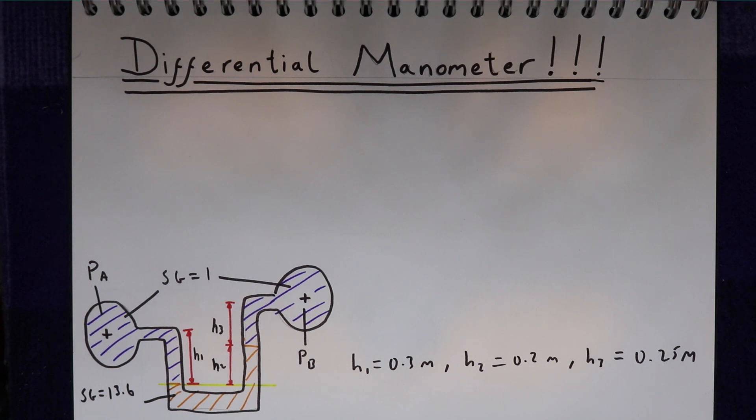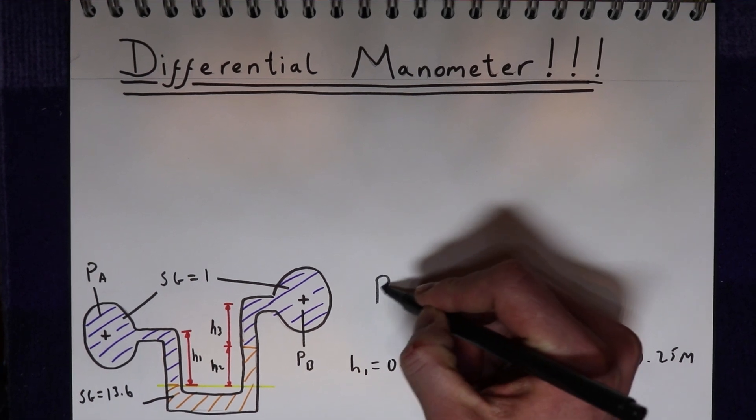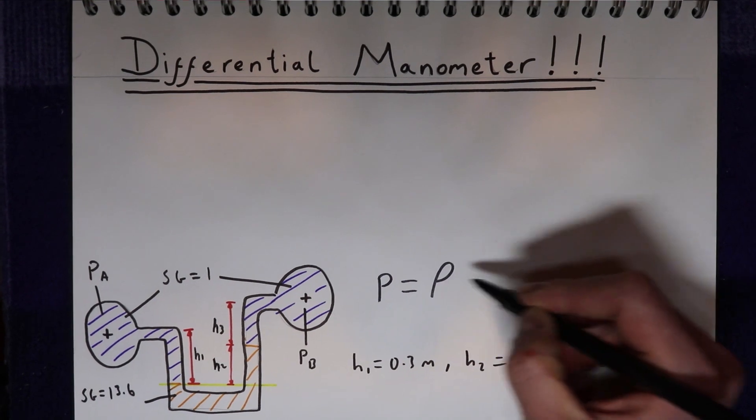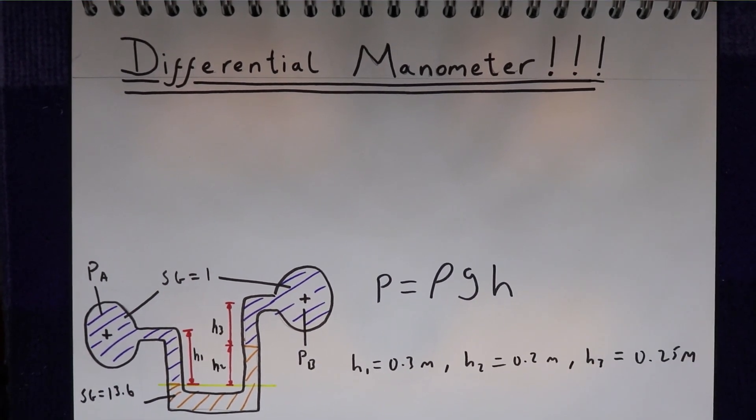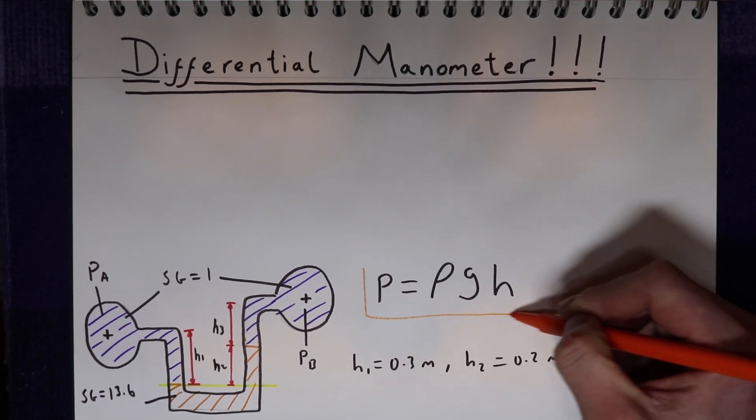So what we can now do is try to solve this problem. And the first thing we have to remember is that pressure is equal to the density of fluid times gravity times the height of that fluid. That's our central rule that we'll use to solve all of these types of problems.